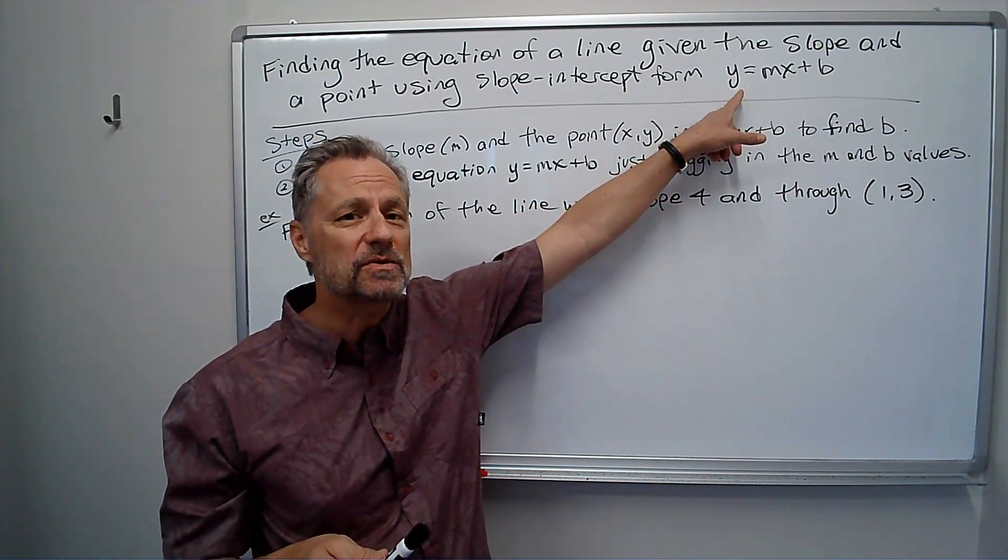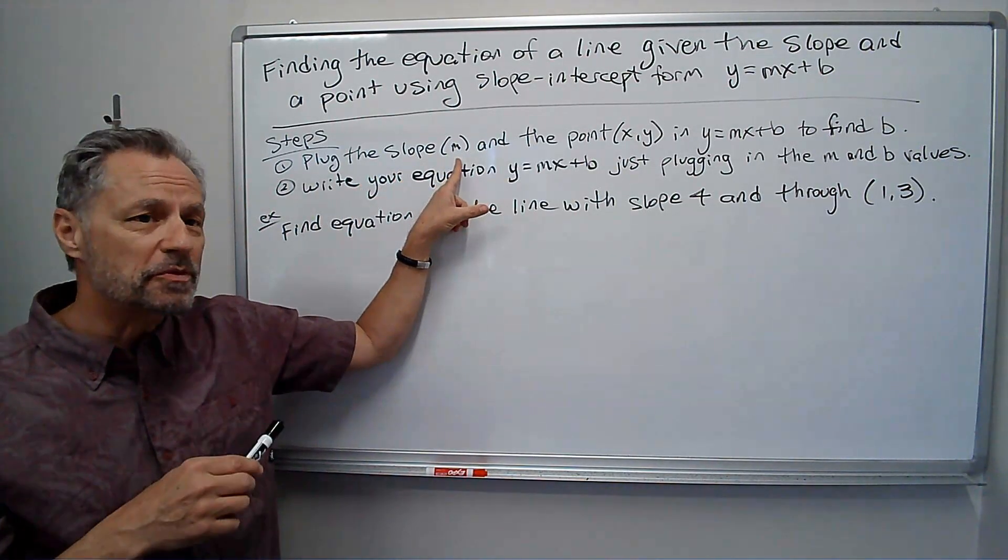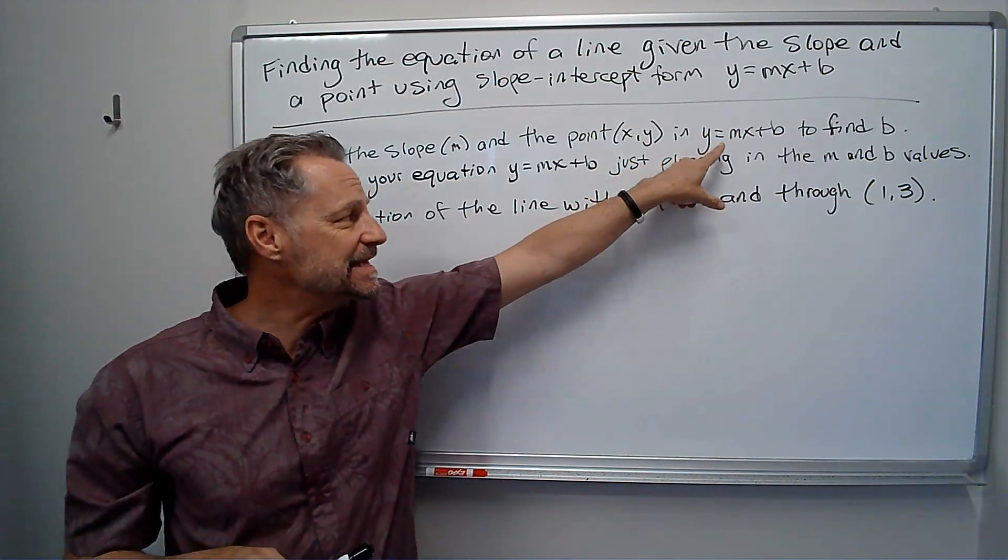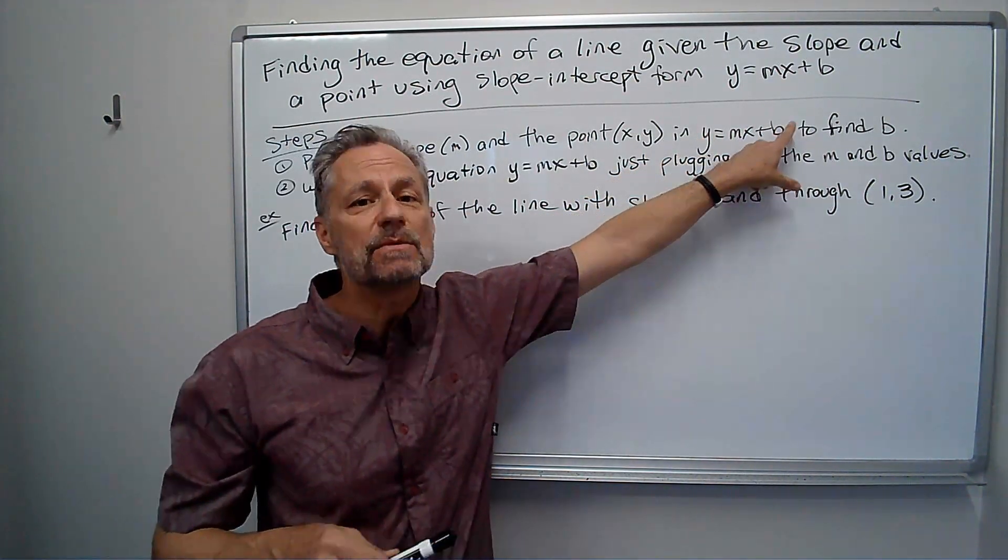So remember, slope-intercept form is y equals mx plus b. What we're going to do is plug in the slope that they give us and the point, both the x value and the y value, into y equals mx plus b. We'll have everything but b, and we're going to solve for b.